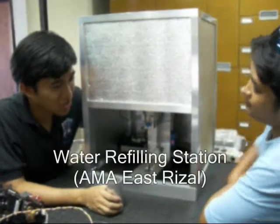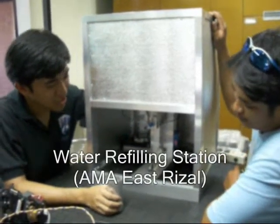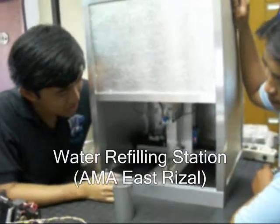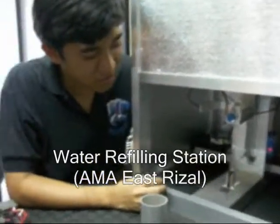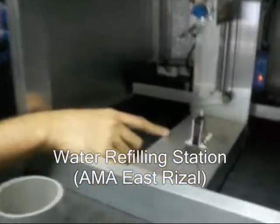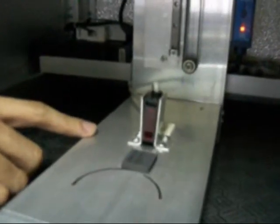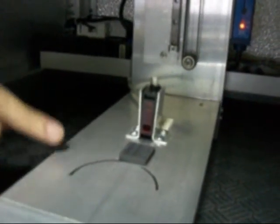Our project is an automated water refilling station which uses three sensors. First is the proximity sensor, which detects the container if it's present.